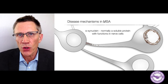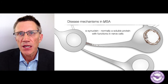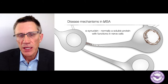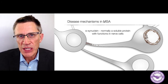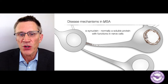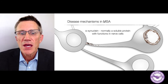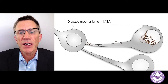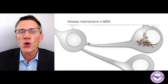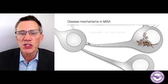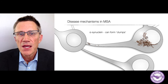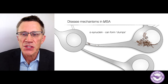Alpha-synuclein is normally a soluble protein that has some kind of function in nerve cells — and maybe in other cells in the body too. It moves around inside nerve cells, and under abnormal conditions, it can form clumps.